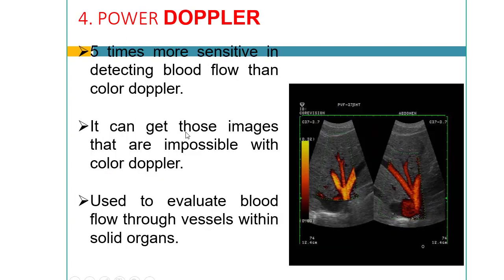Another type of Doppler is power Doppler, which is five times more sensitive in detecting blood flow than color Doppler. It is the most recent Doppler method and can capture images that are impossible with color Doppler. It also evaluates blood flow through vessels within solid organs, and can identify increased blood flow in solid tumors.